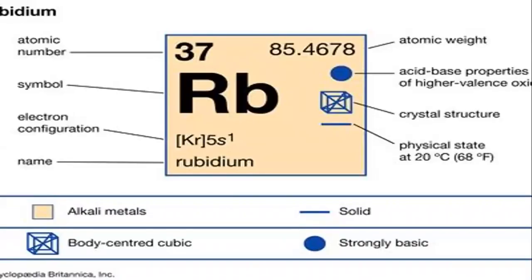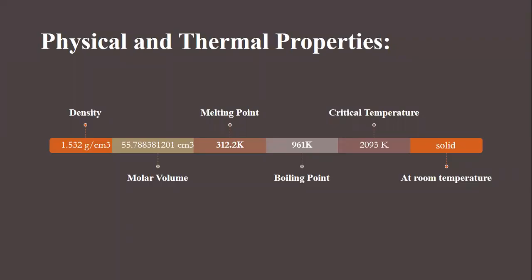Here is a discussion of rubidium's atomic number, atomic weight, electronic configuration, its structure, and its physical state, which is solid. It is strongly basic in nature. Here are some physical and thermal properties of rubidium, including its density, molar volume, melting point, boiling point, critical temperature, and state at room temperature, with corresponding values.